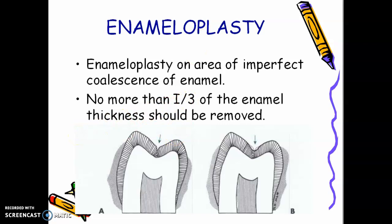If you remove more than one-third, the tooth becomes sensitive and you have to do a restoration. So when you do enameloplasty, you are just removing part of the abnormal enamel. If the pit or fissure is deep and cannot be reached by a toothbrush, you remove a little bit so it will not be an area for plaque retention. Enameloplasty is a procedure that only a dentist can perform.